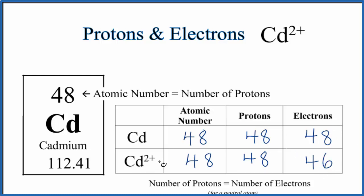So Cd²⁺ has 46 electrons, two less than the neutral atom. The key takeaway is when we have a positive ion like Cd²⁺, we've lost electrons. So we have the same atomic number and number of protons, but the electrons are different.